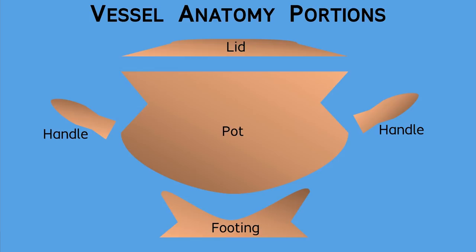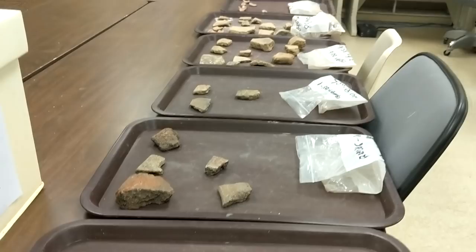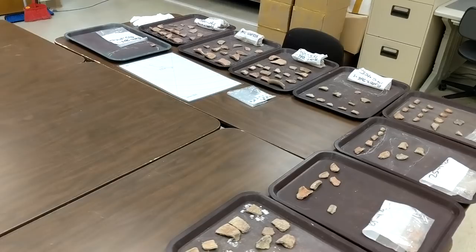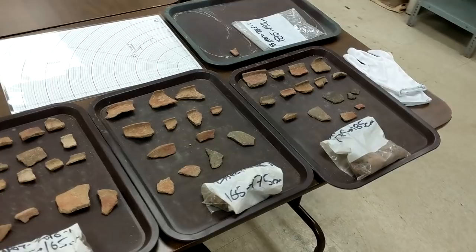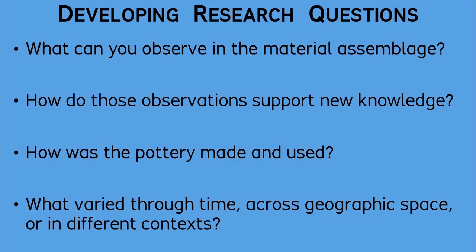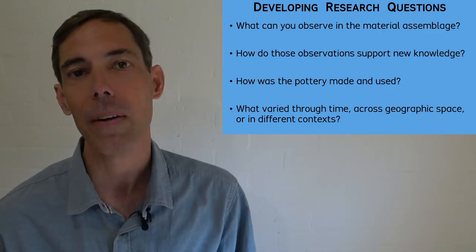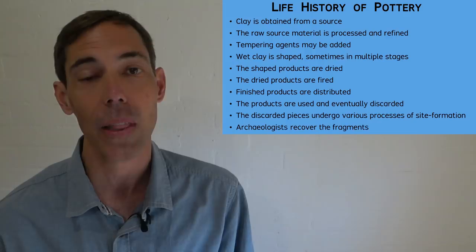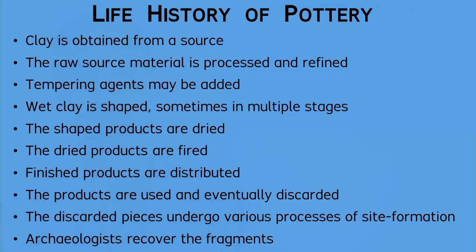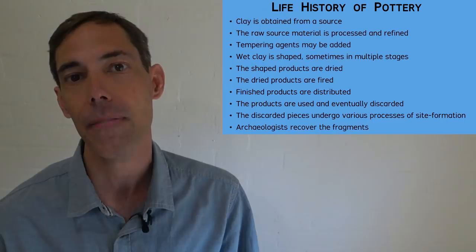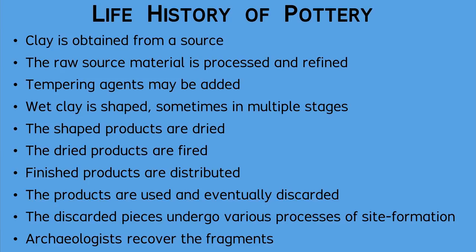After you can observe the physical characteristics in a particular pottery assemblage, you can develop realistic research questions based on the actual observations that are possible in the given material objects. For example, you could pose questions about how the pots were made and used or about the variation in the forms and styles. When developing specific research questions, you could frame your research with reference to the life history of the artifacts, involving the collection of raw materials, the manufacture of the objects, their usage in cultural contexts, and their eventual discard into the archaeological record. You might focus on one part of the life history or examine the entire cycle.